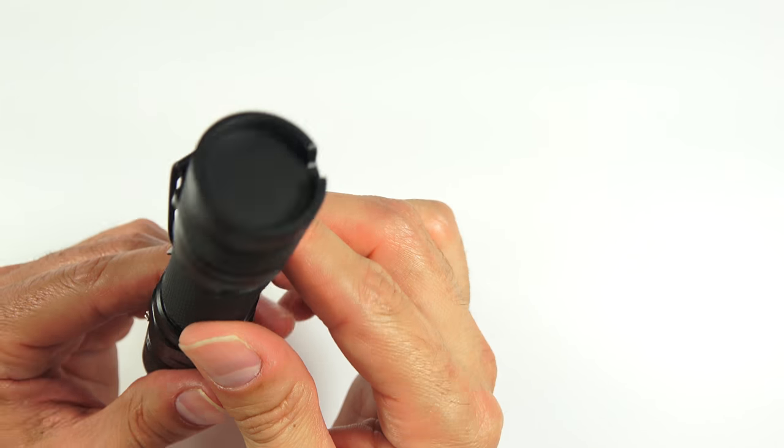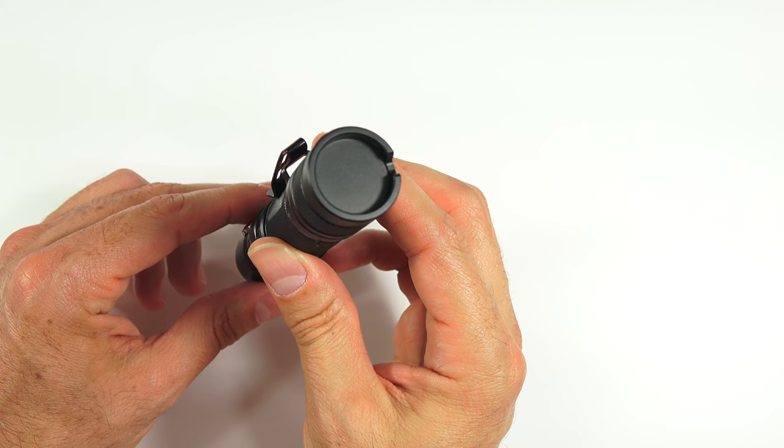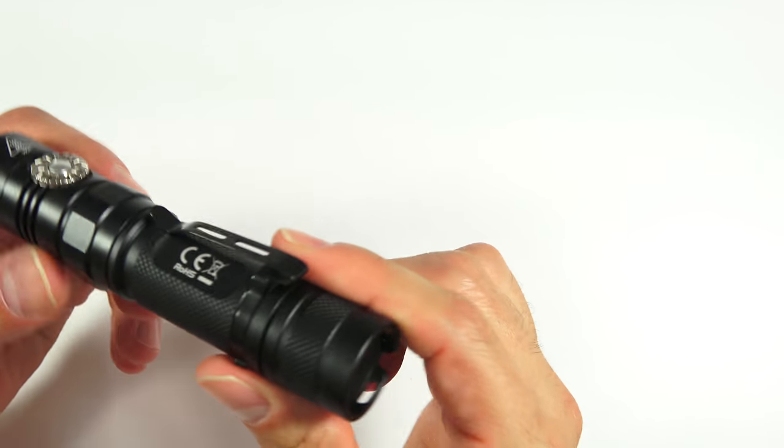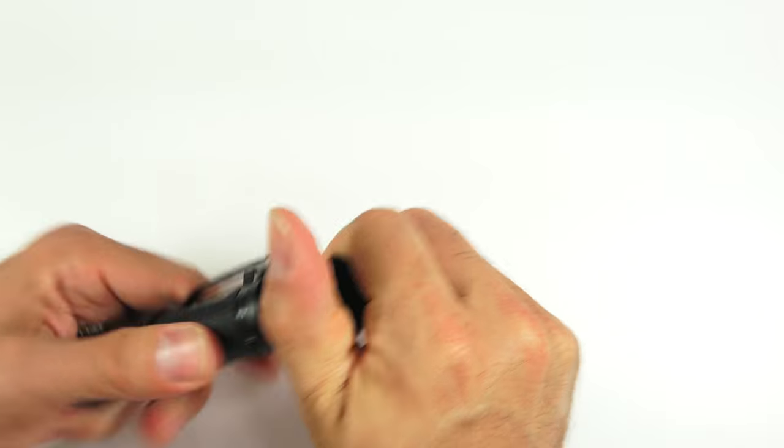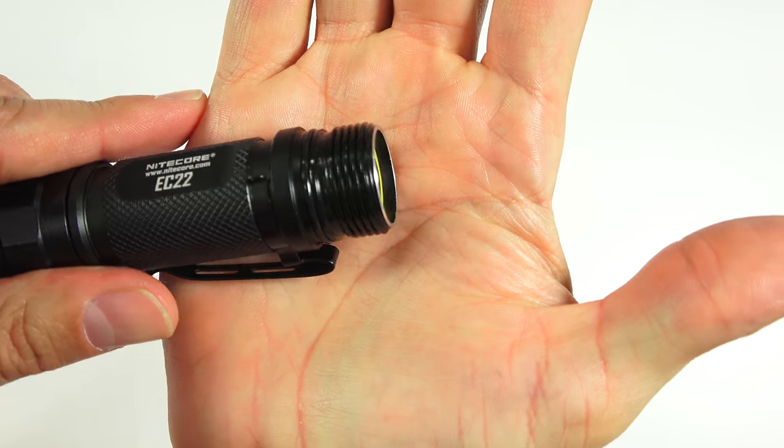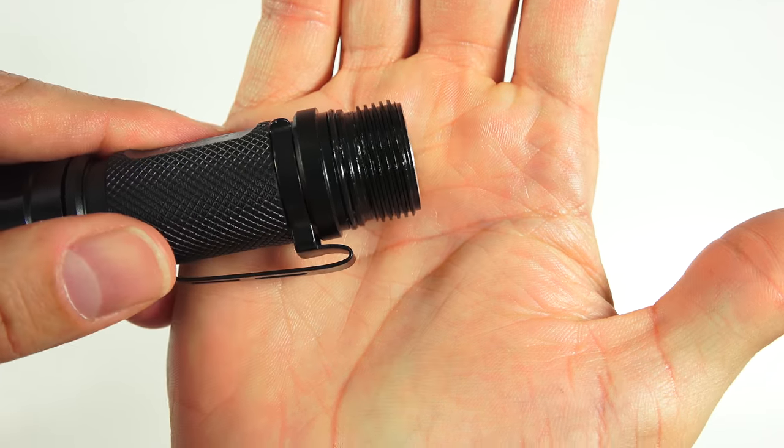Let's look at the construction on the back. As I mentioned, because of that rotary dial, there's nothing on the back. It's just flat back there, so you can obviously tail stand it if you're so inclined. The tail cap comes off. There's an o-ring to help with that water rating, the threads are squared off, so they're going to be pretty tough there.